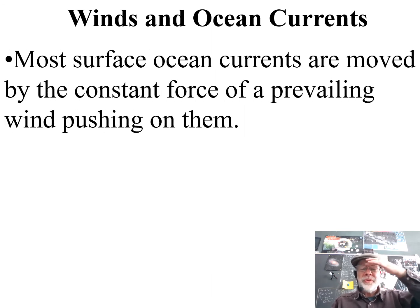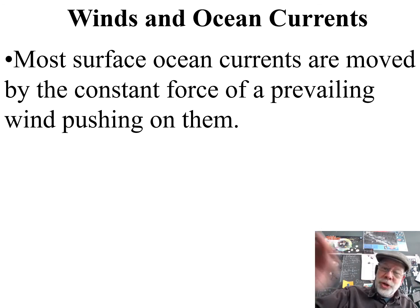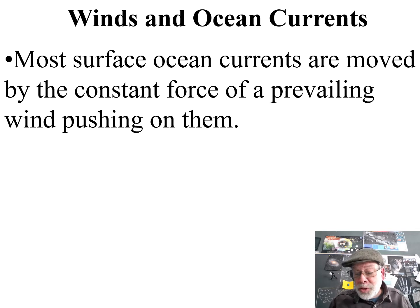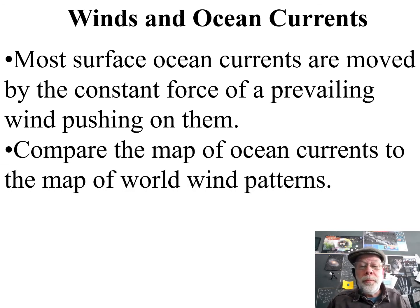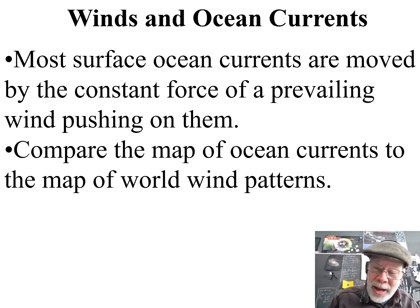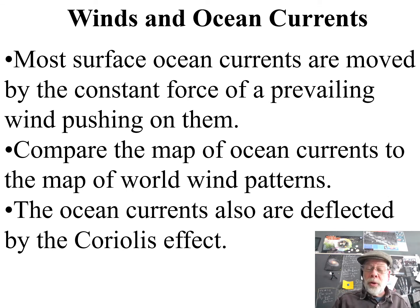Most surface ocean currents are moved by the constant force of wind pushing on them. If you have a big tank of water and you start pushing the water, you actually start affecting it — wind is always blowing on the water so it starts pushing it. If you compare the map of ocean currents to wind currents, you'll notice some distinct patterns, but the ocean currents are also going to be deflected by the Coriolis effect.